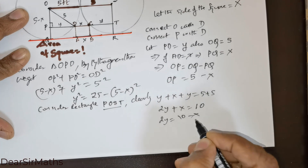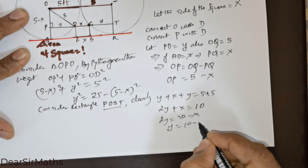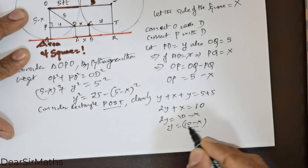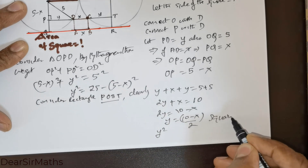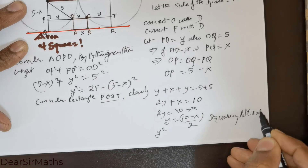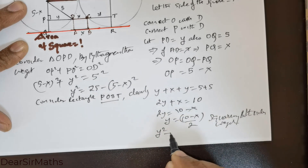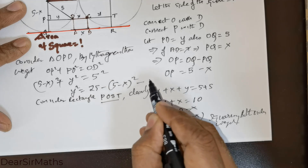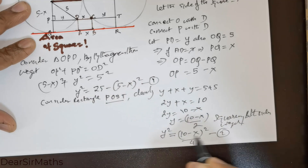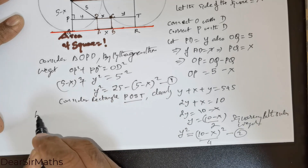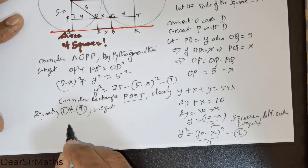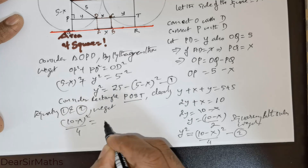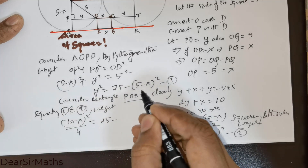From 2Y + X = 10, we get 2Y = 10 − X, so Y = (10 − X) / 2. Squaring both sides gives Y² = (10 − X)² / 4. But from equation 1 we have Y² = 25 − (5 − X)². Equating equations 1 and 2: (10 − X)² / 4 = 25 − (5 − X)².